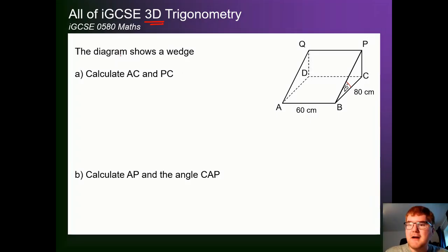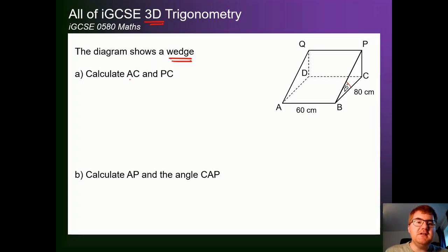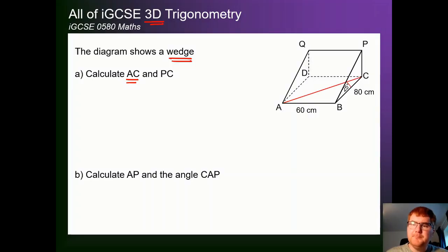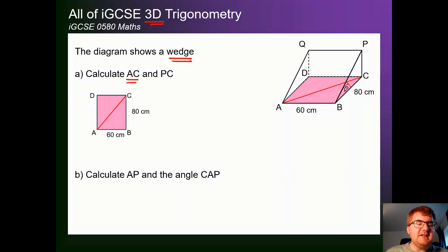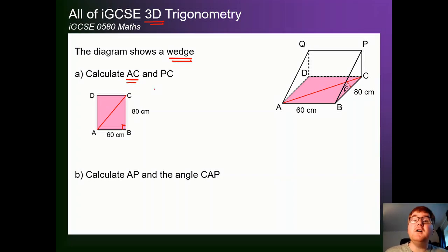Let's get started. The diagram here shows a wedge with all the vertices labeled. The first thing we need to do is work out the length of AC. The best way of doing 3D trigonometry questions is to turn it into a 2D problem. We're looking for this red length here. If we take the base of this wedge, we can bring out a rectangle and draw it in 2D, labeling the vertices so we know exactly what we're dealing with. Then we can just use Pythagoras to work out the distance of AC.